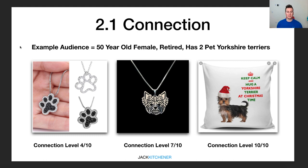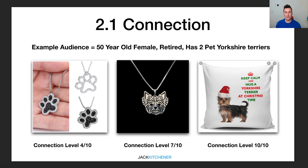Here's an illustration of what I mean. As an example audience, we're targeting a 50-year-old female who could be retired and has two pet Yorkshire Terriers. You could try advertising this first product — a quite nice bracelet — but it's not a super strong specific connection, which is why I've rated it a connection level of four out of ten. We can improve that by advertising a Yorkshire Terrier necklace to this audience. The reason that gets a higher connection level is because now we're showing her a dog product specific to the actual dogs she owns.